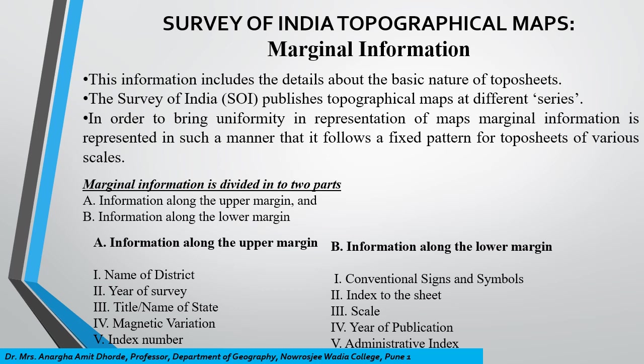Survey of India publishes topographical maps at different series, so different areas are covered by different maps at different scales. In order to bring uniformity in representation of maps, marginal information is represented in such a manner that it follows a fixed pattern for toposheets of various scales. This marginal information is divided into two parts: information along the upper margin and information along the lower margin.